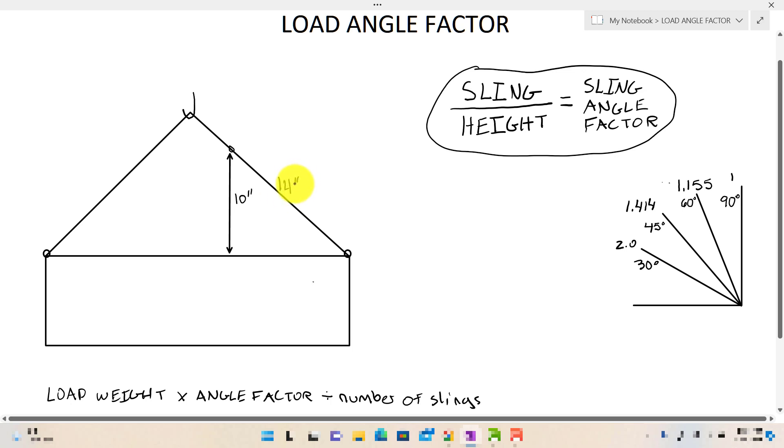So now we have both the sling and the height, which is all that we need. So we do 14 divided by 10 equals 1.4. A much easier way to do this as well is as soon as you see that this is 14 inches, you simply just move the decimal over to here, which as you can see is 1.4. Now, if this were 12 inches, it would be 1.2. That would be your sling angle factor. Or if it was 16 inches, it would be 1.6.